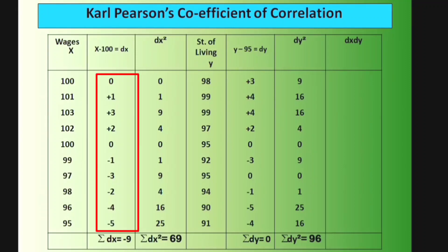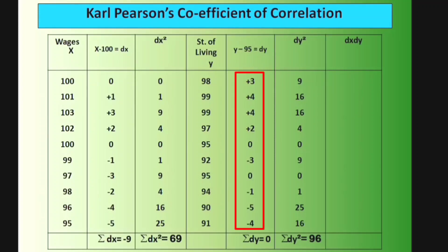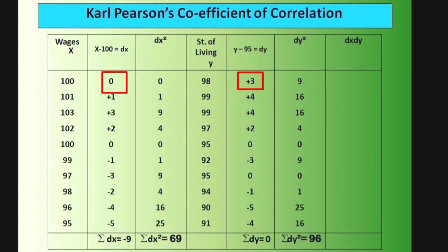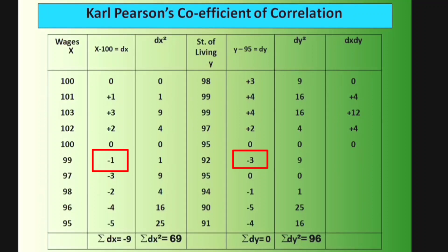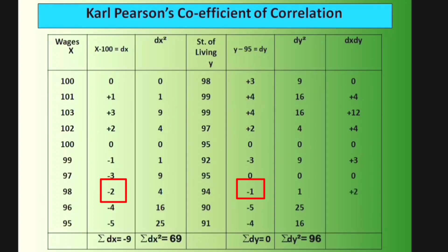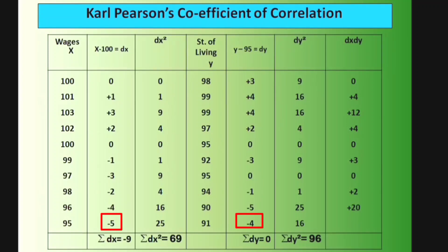For the dx·dy column: 0×3=0, 1×4=4, 3×4=12, 2×2=4, 0×0=0, (−1)×(−3)=+3, (−3)×0=0, (−2)×(−1)=+2, (−4)×(−5)=+20, (−5)×(−4)=+20. So Σdx·dy = 0+4+12+4+0+3+0+2+20+20 = 65.